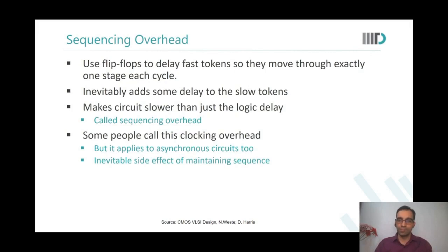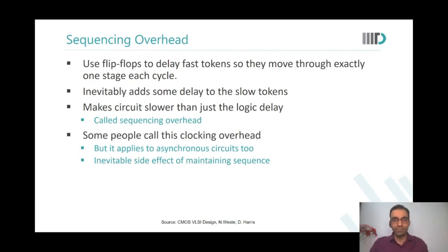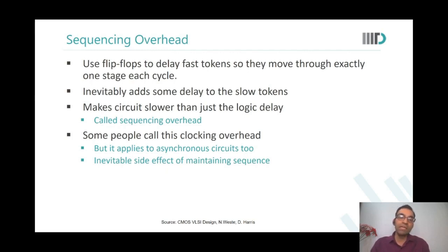There are two purposes of using sequencing circuits: first is to ensure sequencing, and second is to improve overall system throughput. But in wave pipelining you can say that you do not need to keep these flip-flops or sequencing elements in between because you are always safe. Rather, you are improving the speed of the circuit because you achieve a kind of parallelism.